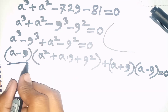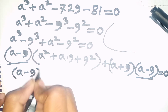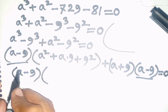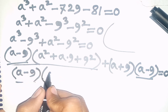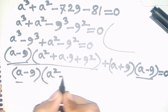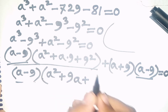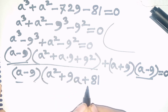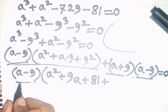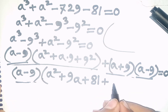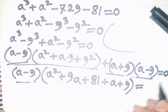Now we see (a - 9) is common. So (a - 9) is taken out of the bracket. The (a - 9) terms cancel, leaving: a² + 9a + 81, then plus a + 9, then bracket close is equal to 0.